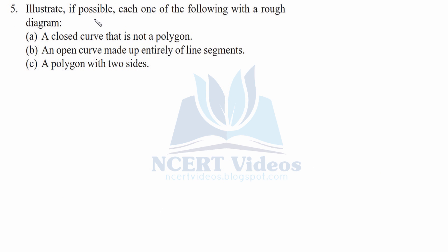Fifth. Illustrate if possible each one of the following with a rough diagram. We have to see whether we can make it. A closed curve that is not a polygon, an open curve made up entirely of line segments, and a polygon with two sides.